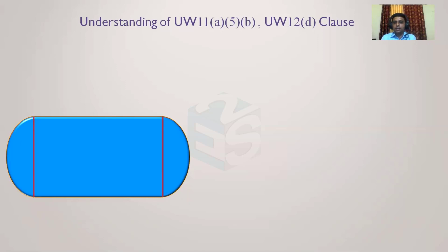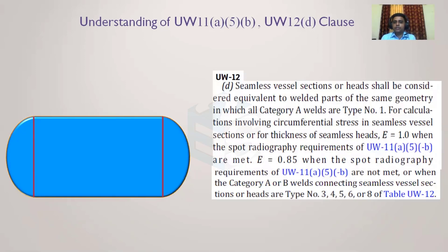Now the clause has changed from UW-11a5b; it is now UW-12d for seamless sections. Imagine the vessel shell is seamless — a seamless pipe such as ASTM A106 Grade B — so there is no joint along the L-seam. If the heads are also standard end caps, there is no joint there either. Per the code, seamless vessel sections or heads shall be considered equivalent to welded parts with category A weld joint type number 1, meaning 100% radiography is assumed.